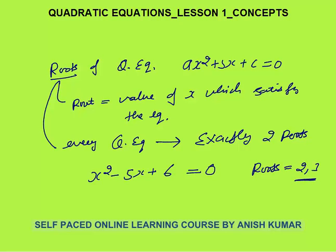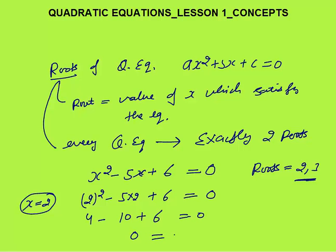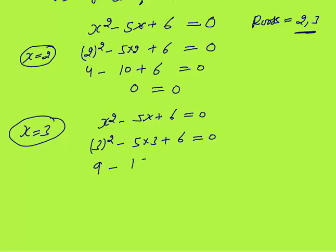I will explain what root means. If you put x = 2: 2² - 5×2 + 6 = 4 - 10 + 6 = 0. So x = 2 satisfies the equation. Same way, x = 3 also satisfies: 3² - 5×3 + 6 = 9 - 15 + 6 = 0. So 2 and 3 are the roots of this equation.